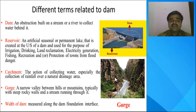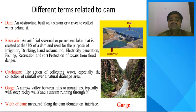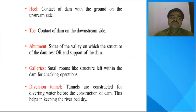The next term is gorge — as you can see in the diagram, it is a narrow valley between hills or mountains, typically with steep rocky walls and a stream running through it. The next term is the width of the dam, which is measured along the dam or the foundation interface.